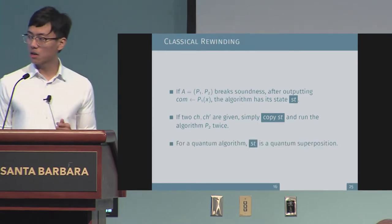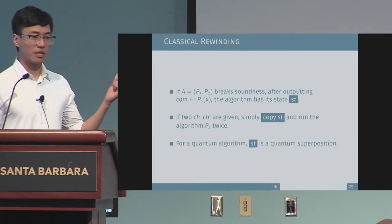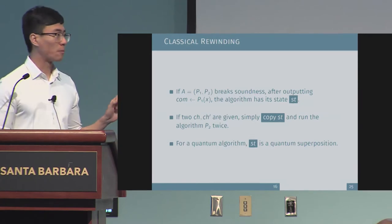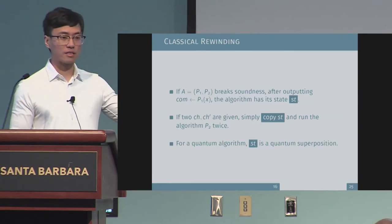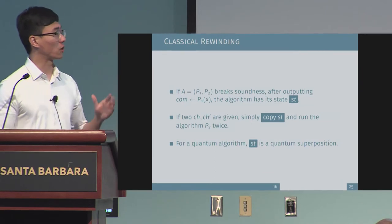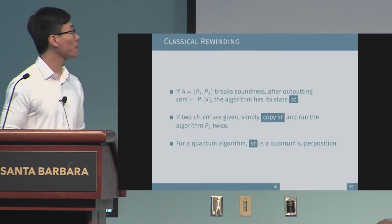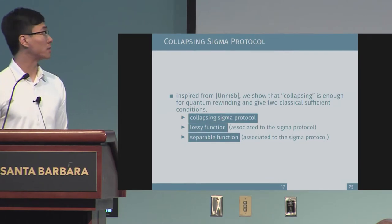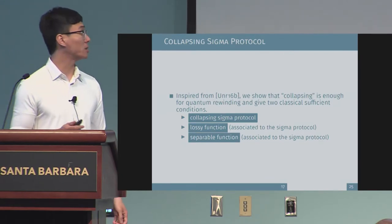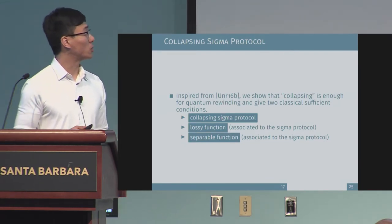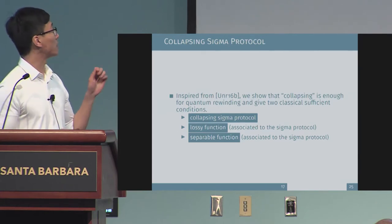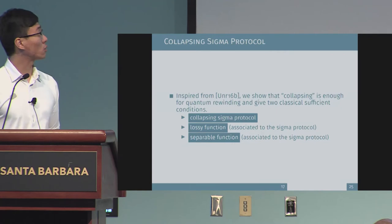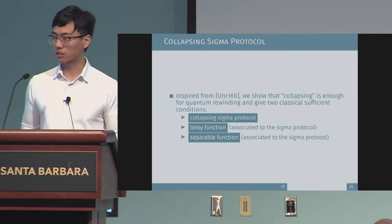However, for a quantum algorithm, this state is actually a quantum superposition. We cannot use this cloning technique because we know it's hard to clone quantum superpositions. Inspired by Unruh's work on collapse-binding commitment schemes, we showed that the collapsing definition is enough for quantum rewinding, and we also gave two classical sufficient conditions.